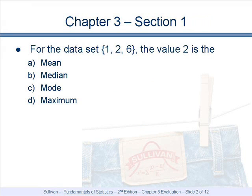For the dataset 1, 2, 6, the value 2 is the mean, median, mode, or maximum.